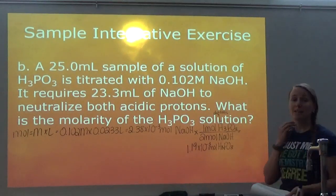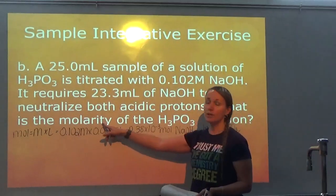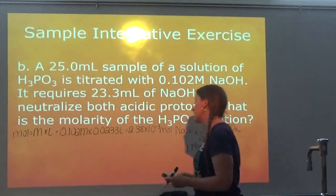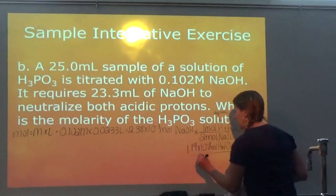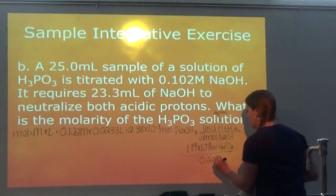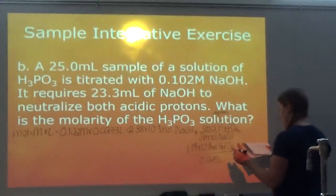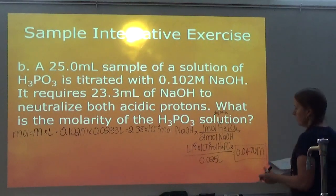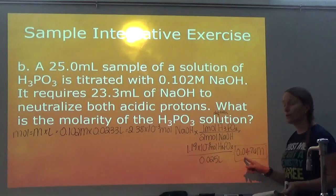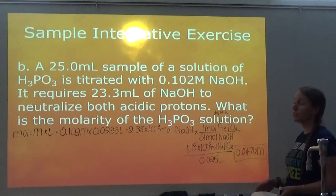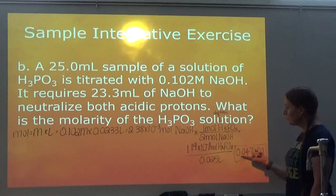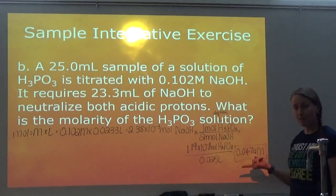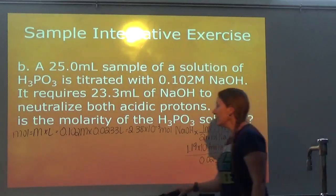It didn't ask me how many moles — it asked for molarity. I have the moles and I know the starting volume was 25 mL. So I divide: 1.19×10⁻³ mol ÷ 0.025 L = 0.0476 M. We're going to need this concentration for Part C — we're about to do an ICE chart.